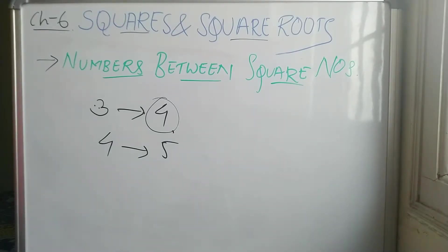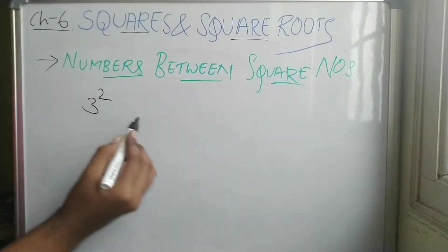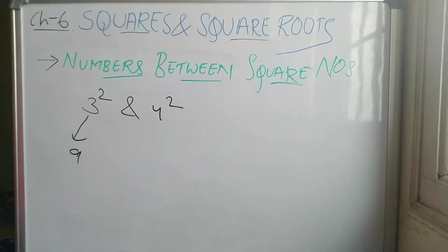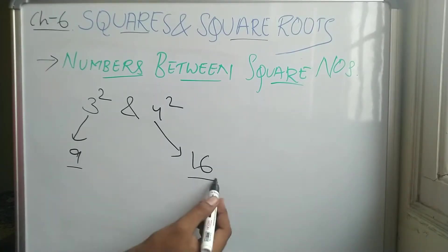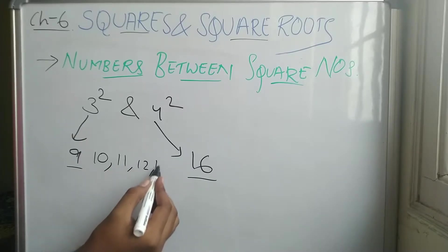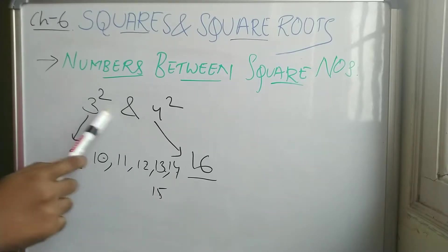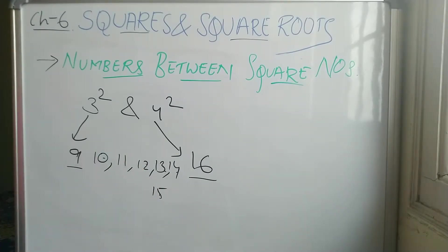So how do you identify how many numbers are between both these numbers? Between 9 and 16, we have 10, 11, 12, 13, 14, 15 — that's six numbers. So between 3 squared and 4 squared, there are six numbers.